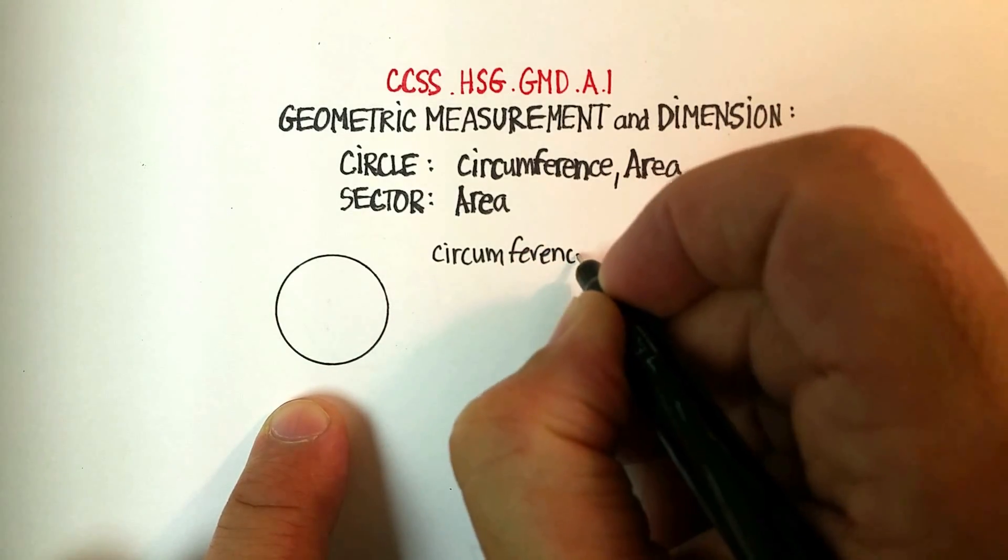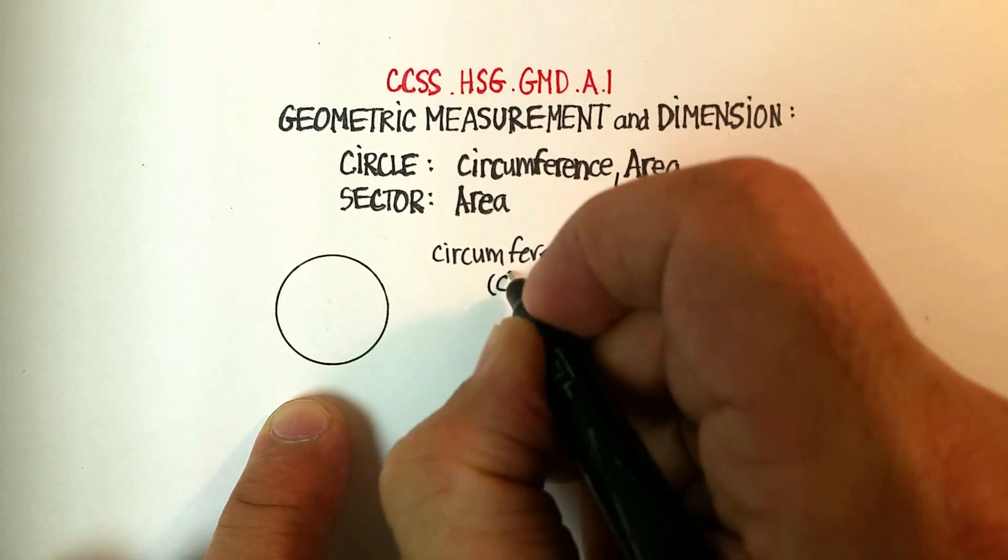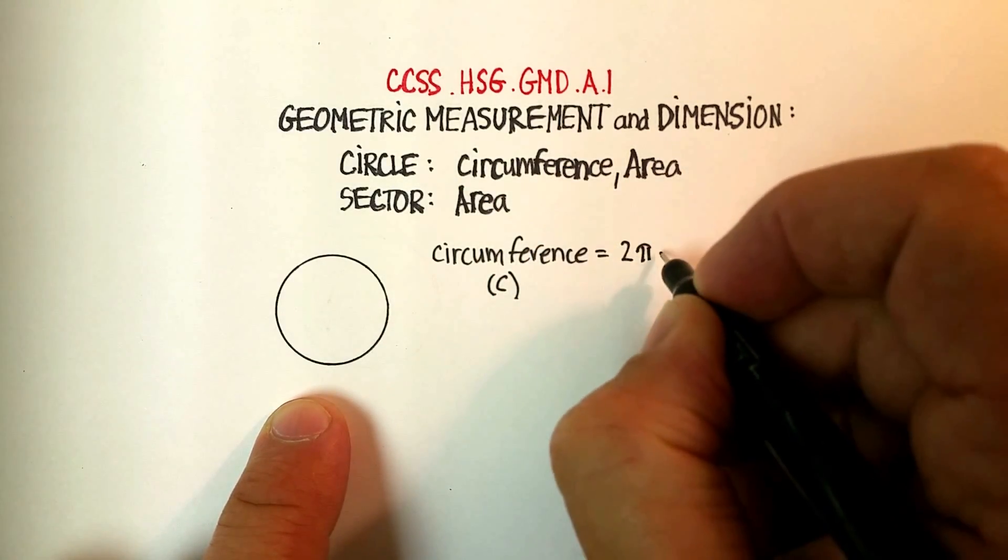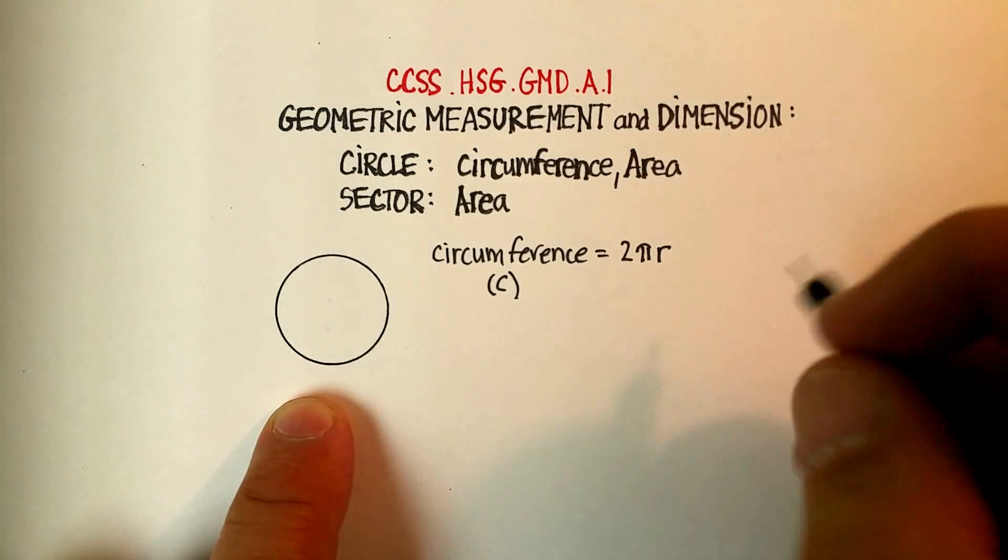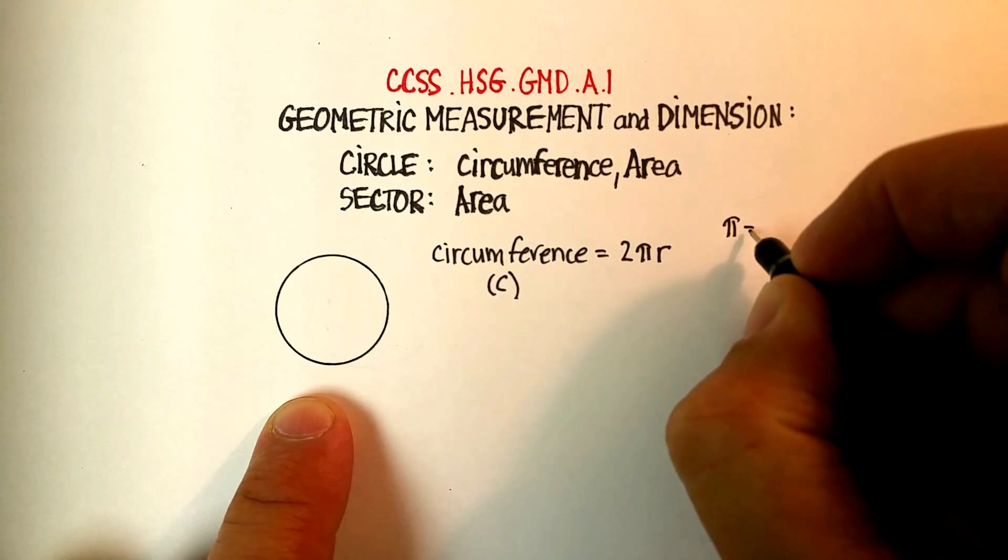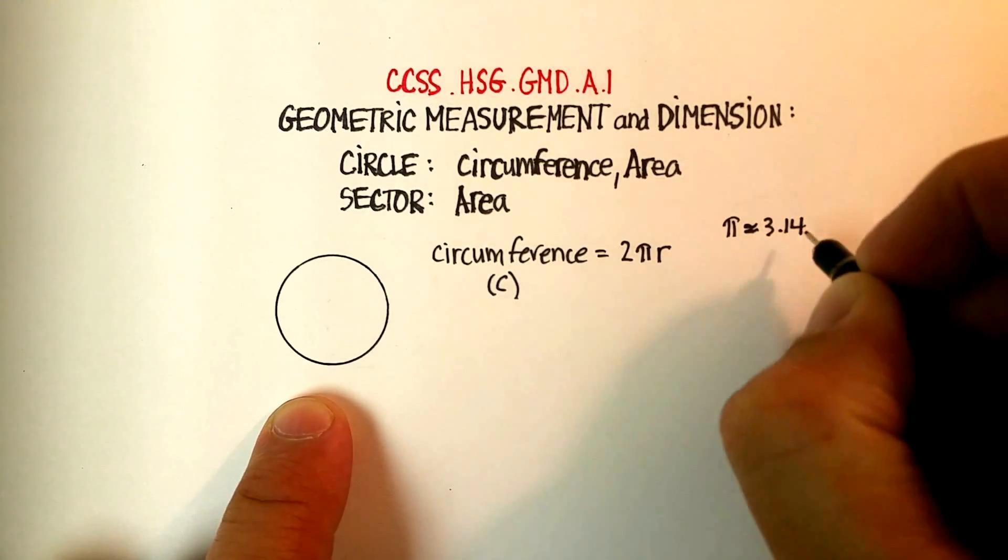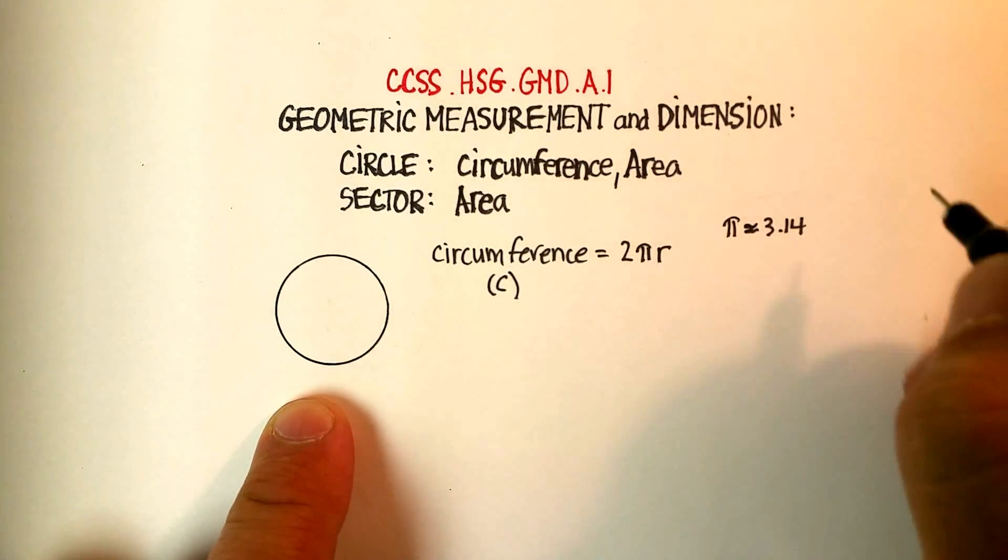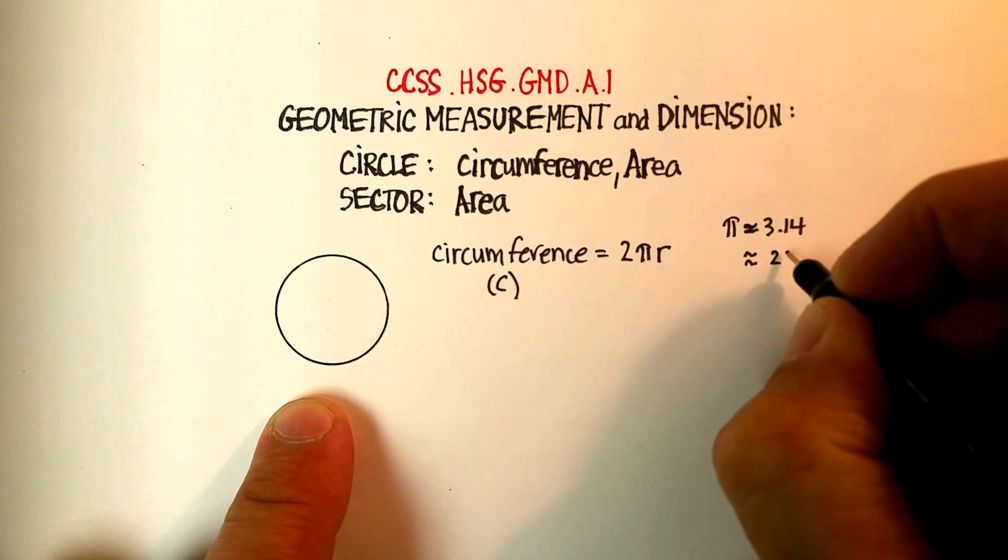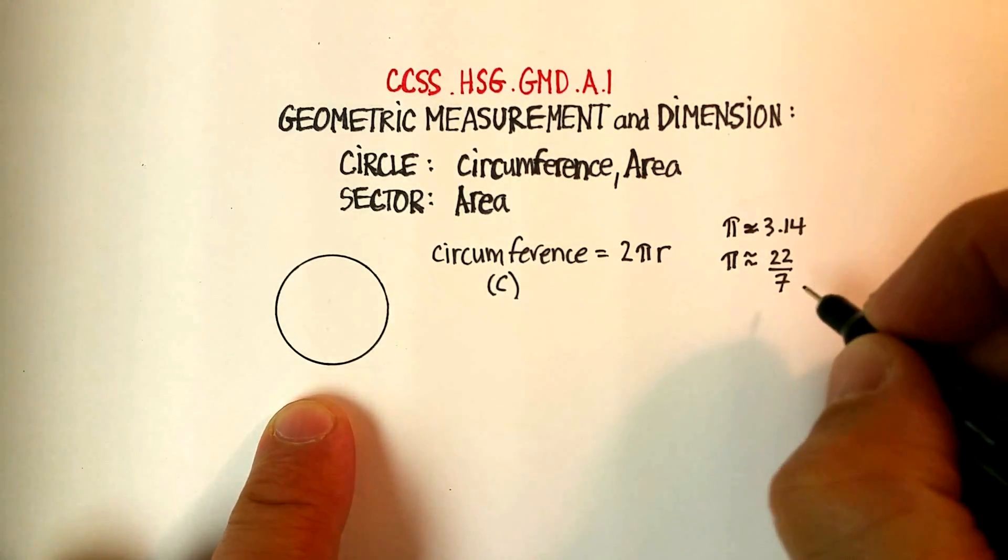Circumference, usually denoted by the letter C, is equal to 2πr. And remember, pi is approximately, there's two ways to actually write pi, 3.14 and it continues on, and that's usually just good enough for most people. Or you can also write it as a fraction, which is 22 over 7. So please be able to recognize both of those.